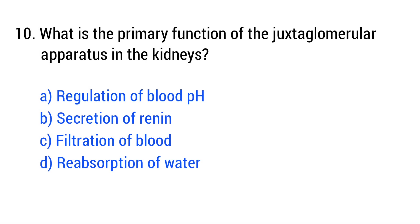Question No. 10. What is the primary function of the juxtaglomerular apparatus in the kidneys? The right answer is option B: Secretion of renin.